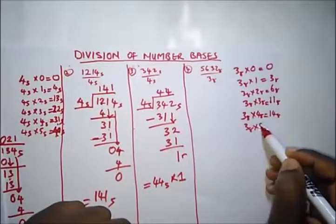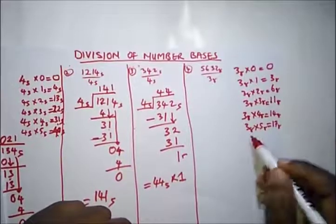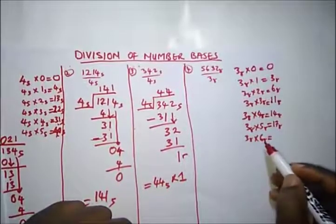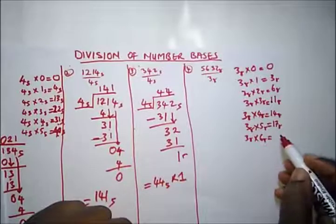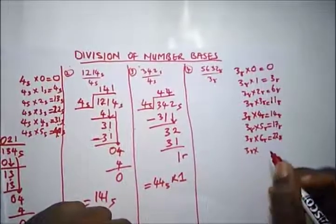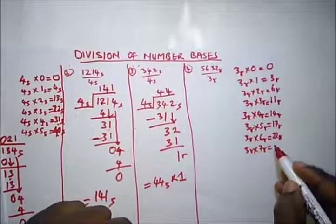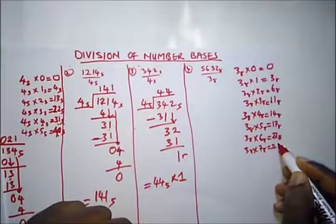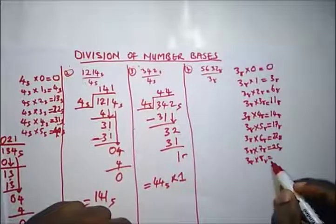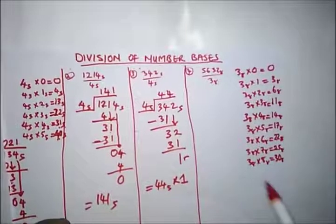3 times 5 in base 8: that's 15, and 8 goes once with remainder 7. So 3 times 5 is 17 base 8. 3 times 6 in base 8: that's 18, and 8 goes twice with remainder 2. So 3 times 6 is 22 base 8. 3 times 7 in base 8: that's 21, and 8 goes twice with remainder 5. So 3 times 7 is 25 base 8. 3 times 8 in base 8: that's 24, and 8 goes 3 times with remainder 0. So 3 times 8 is 30 base 8. That's our times table for 3 in base 8.